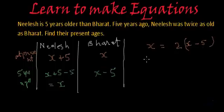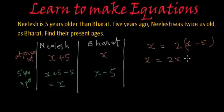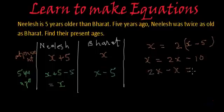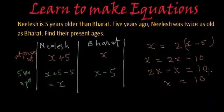If we solve it further, we will get X equal to 2 times (X minus 5). Let's distribute: 2 multiplied by X is 2X, and 2 multiplied by 5 is 10, giving 2X minus 10. Repositioning, we get 2X minus X equal to 10, which means X is equal to 10. X is Bharat's age, so at present Bharat is 10 years old.